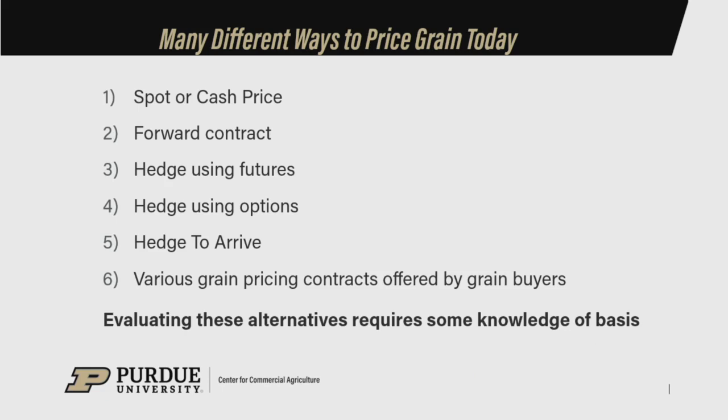There are a lot of different ways to price grain today. Things have really changed in recent years. We have a number of different tools available to the farmer to market their grain. By no means is this list all inclusive, but it gives us a good starting point. We have our traditional spot or cash price, and forward contract — tools that a lot of farmers we work with are pretty familiar with.